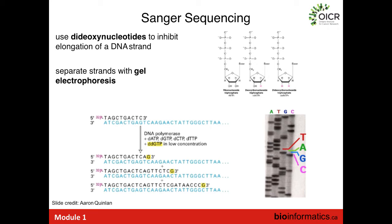The second technique Sanger used is gel electrophoresis, which sorts DNA fragments by their size. If you put a sample of DNA in a gel and apply a voltage gradient, the DNA propagates through the gel according to its size — shorter fragments propagate further, longer fragments don't travel very far. This allowed Sanger to sort these fragments with a defined stopping position by size, and read off the DNA sequence according to fragment size by identifying what the last base is.